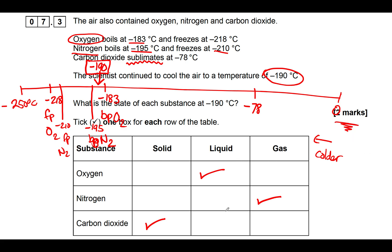One final point about this question: it's worth two marks and you've got to do three things. You need to get all three ticks in the right box to get two marks. If you get one tick wrong you'll get one mark, and if you only get one tick right, you get no marks at all.